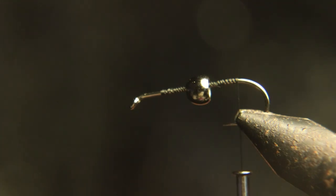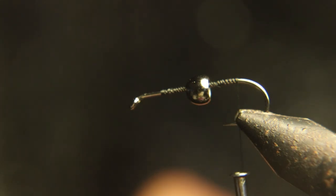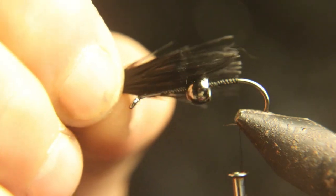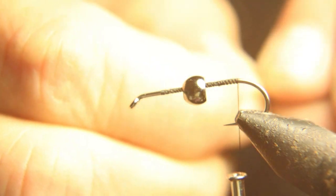Here we're going to use black marabou like a regular woolly bugger would. We're going to measure the tail the length of the shank of the hook. This is a 3x long hook, but that's okay. You still want a pretty long tail on these flies.